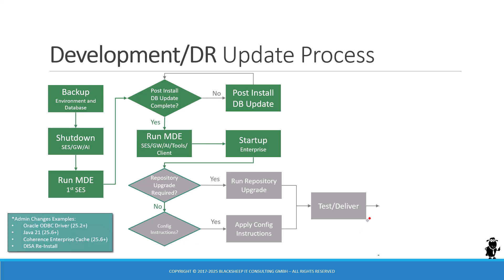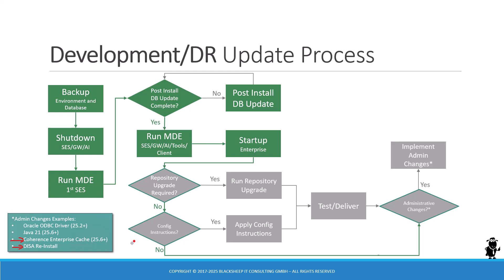Then there's the big question of administrative changes. With 25.6, if you're coming from a release like 24.something or even 25.1, you have two major admin changes: the ODBC driver migration if you use Oracle database, and the Java 21 migration. You should also consider testing the new Coherence Enterprise Cache, and you will have to reinstall DESA, as it has a brand new installer architecture. So there are plenty of administrative changes to put on your checklist and implement. That completes the development or DR update process.